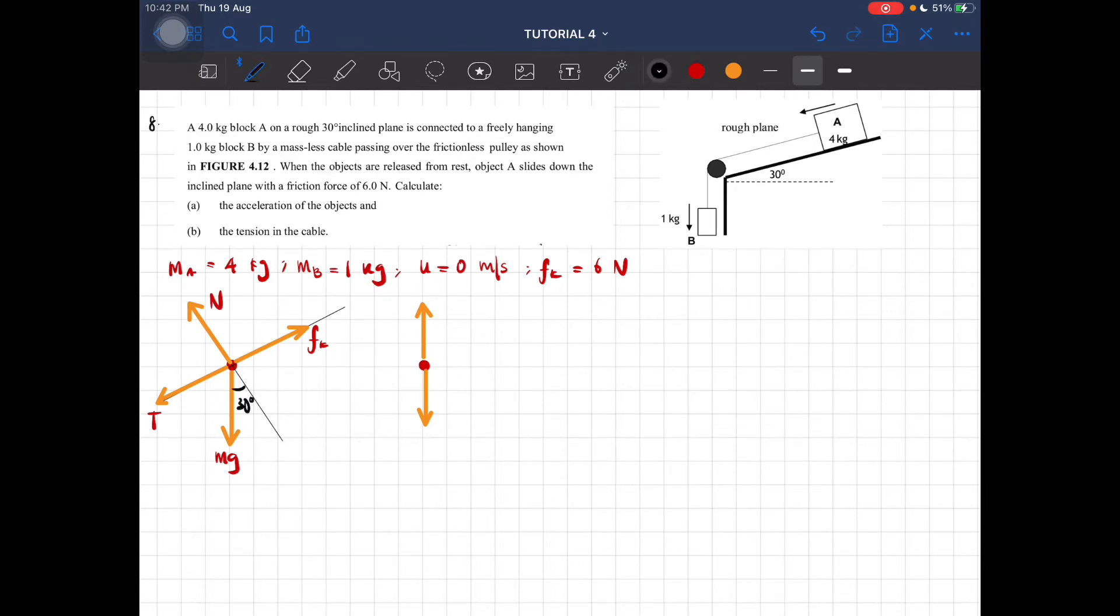The angle here is 30 degrees. This is m_B g. This is tension. Now we have the free body diagram and can start to find the equation.